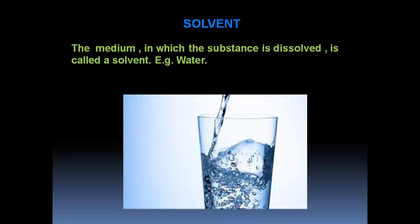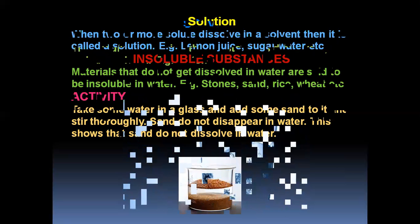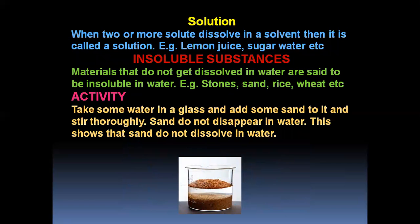What is a solvent? The medium in which the substance is dissolved is called a solvent. Example: water. It is called a solvent in the solution. What is a solution? When two or more solutes dissolve in a solvent, it is called a solution. Examples: lemon juice, sugar water, etc.